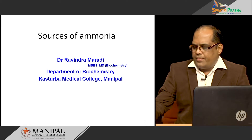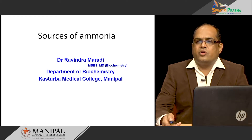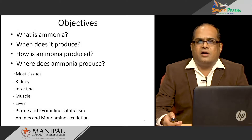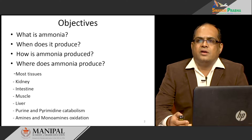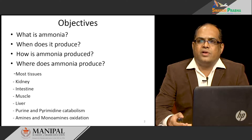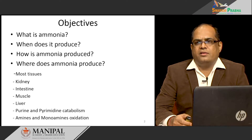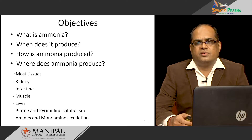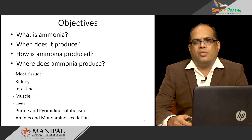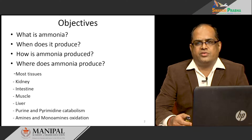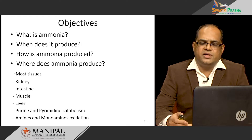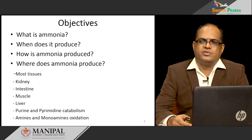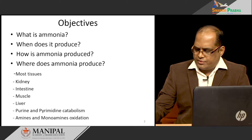The topics which I am going to discuss are under the following headings. First, we will see what is ammonia, then when does it produce, how ammonia is produced, and where it is produced — ammonia is produced in different tissues, and we will see how it is produced in each.